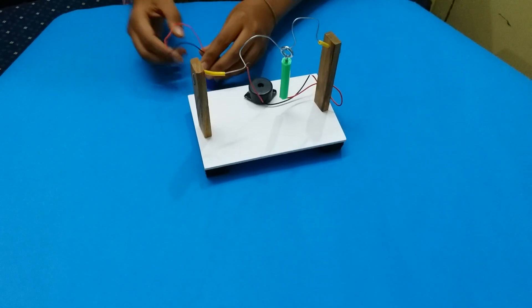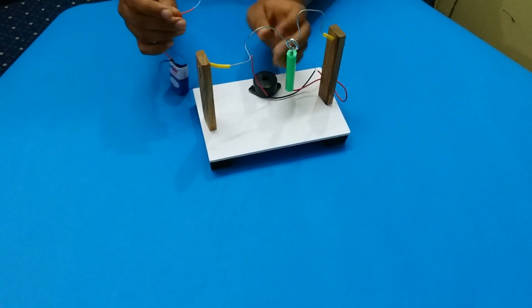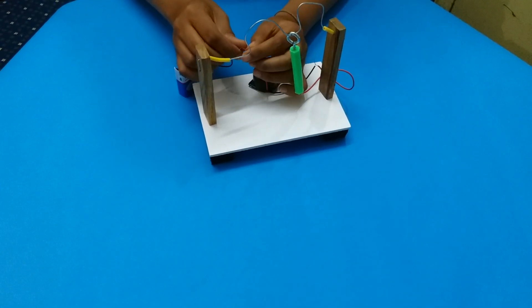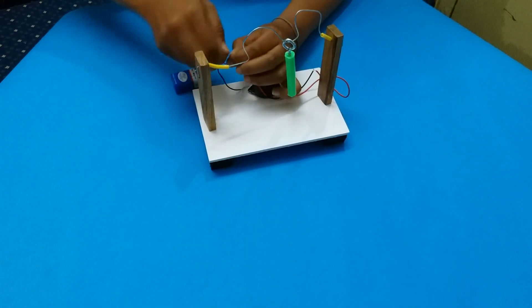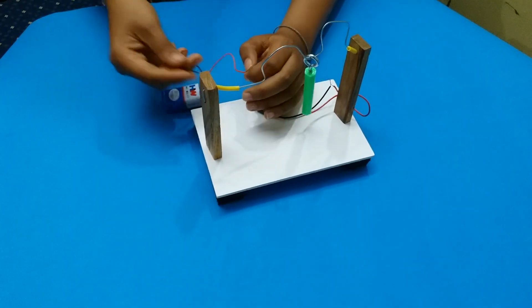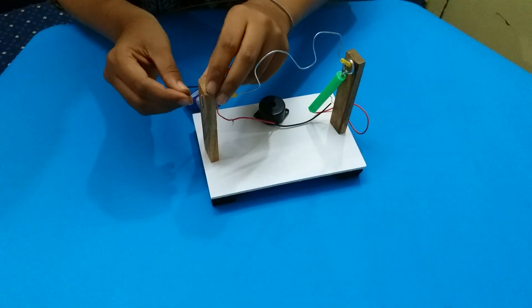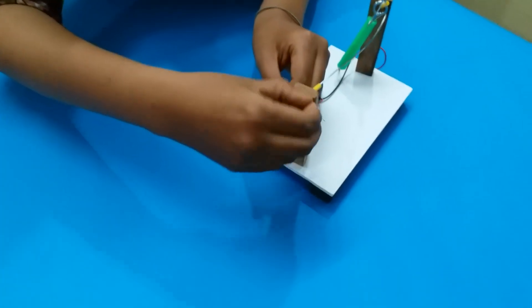After fixing the snap, connect the red wire of the snap to the red wire of the buzzer, those are the positive terminals, and connect the black wire to the steel wire.